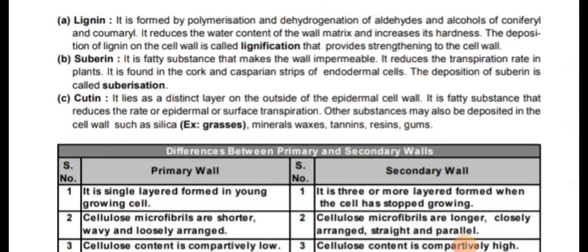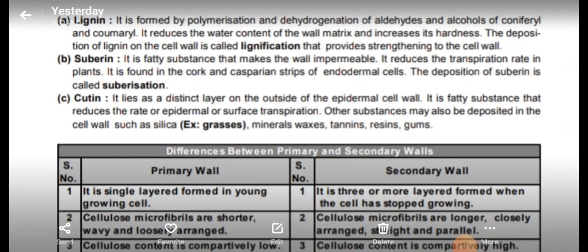Lignin is formed by polymerization and dehydrogenation of aldehydes and alcohols of coniferyl and coumaryl. Lignin deposition reduces the water content of the wall matrix and increases its hardness. The deposition of lignin on the cell wall is called lignification, and it provides strengthening and stiffness to the cell wall.